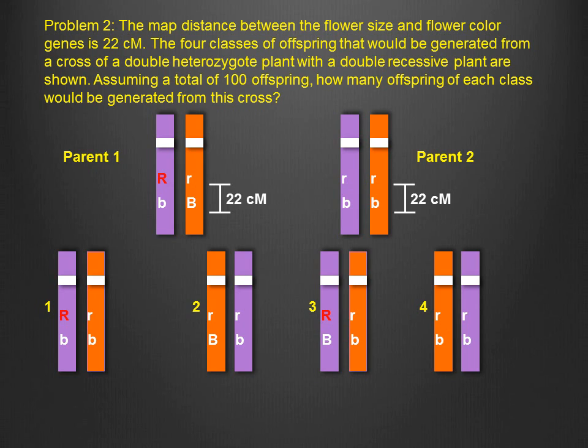First, we must identify which offspring are the parental offspring and which are the recombinant offspring. Recall from the video on genetic linkage that the chromosome inherited from the heterozygote parent determines whether the offspring are of the parental type or the recombinant type. The class 1 and 2 offspring inherited a non-crossover chromosome from the heterozygote parent and are therefore parental type.